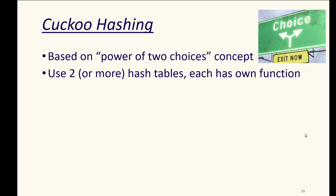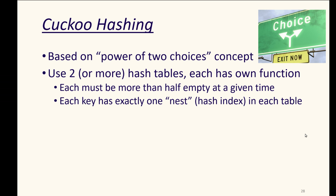So something won't typically hash to the same place in hash table 1 as it would in hash table 2. Each of them must be more than half empty at any given time, and each key can have only one nest, one hash index in each table. So we shouldn't have our keys mapping to multiple indexes in those tables. This is sort of a standard hash table kind of thing.